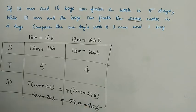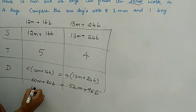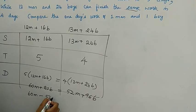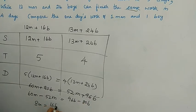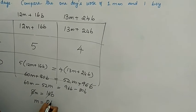Simplifying: 60m minus 52m equals 96b minus 80b. So 8m equals 16b. Therefore, m equals 2b.